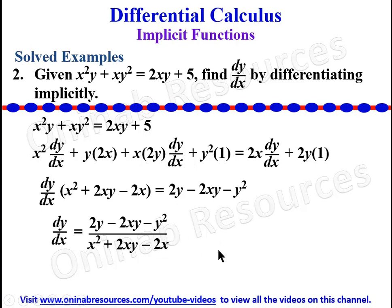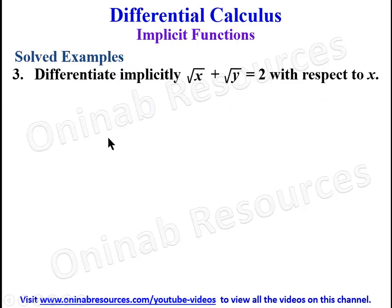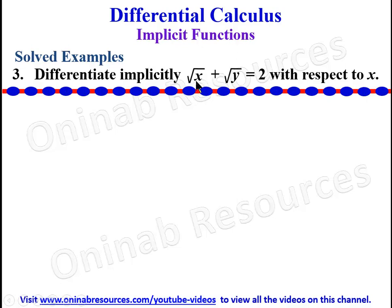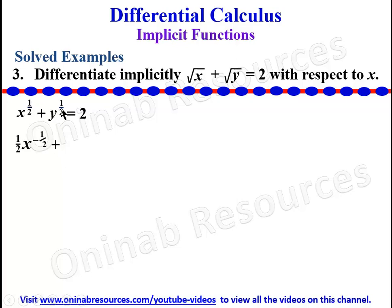In example 3, we differentiate implicitly √x + √y = 2 with respect to x. For easy differentiation we express in index form: x^(1/2) + y^(1/2) = 2. Differentiating the first term, we bring down the power 1/2 and reduce the exponent by 1 to get (1/2)x^(−1/2). For the second term we get (1/2)y^(−1/2)·dy/dx. The derivative of the constant 2 is zero, so the whole expression equals zero.